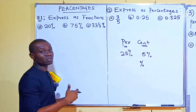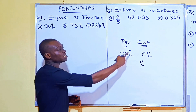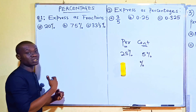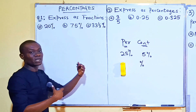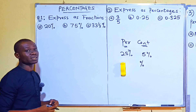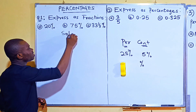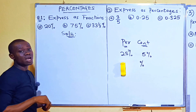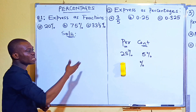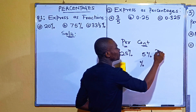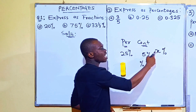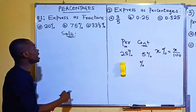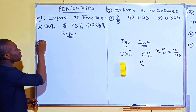Now we are going to look at forms of conversions. Remember we said percentage is a form of fraction, so we will be looking at how to write percentages as fractions and vice versa. The first example says express the following percentages as fractions. Like I said, once you see something in percentage — for instance x% — that means x out of 100, which is x over 100.